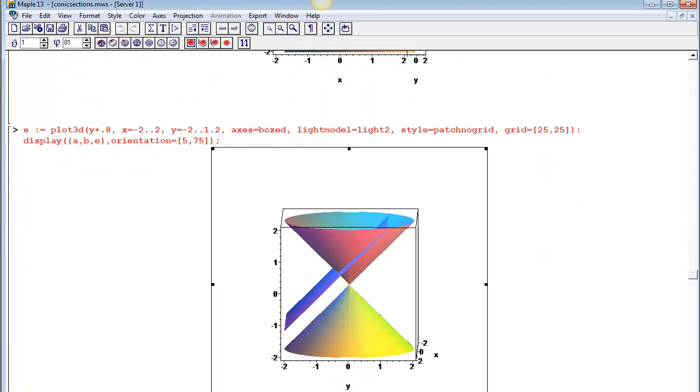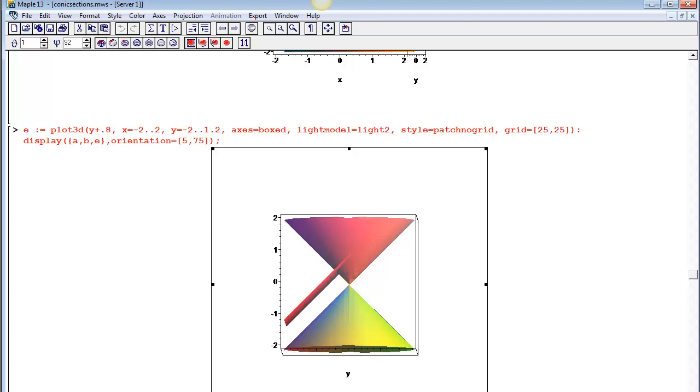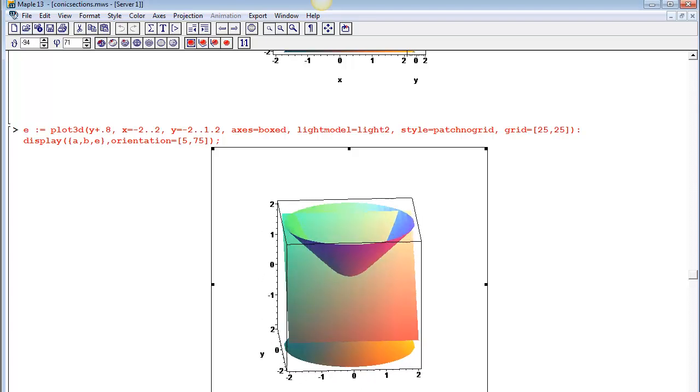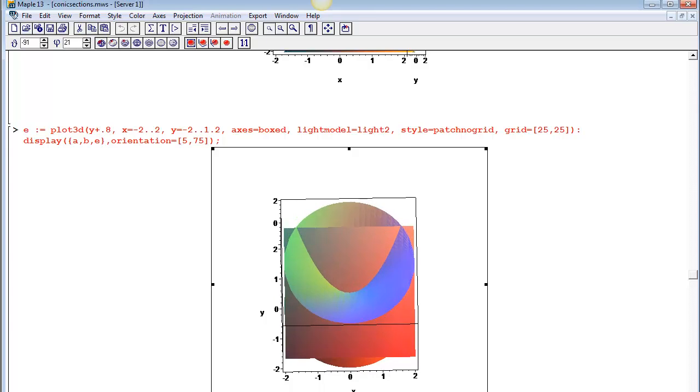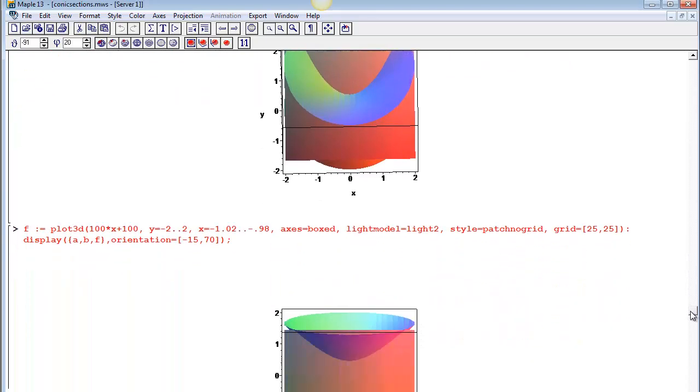There's a special case right here where you can see the tilt of the plane matches the tilt of the sides of the cone, so it only cuts the top part. The shape that you get there, you probably recognize as being a parabola.